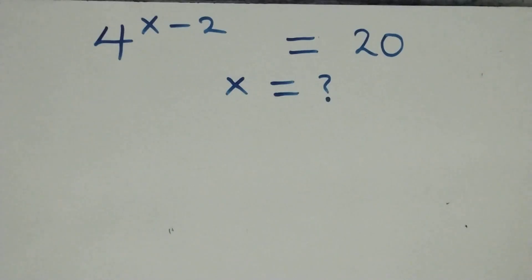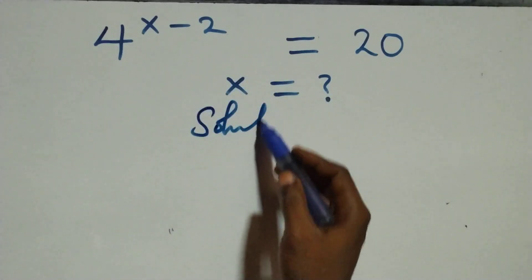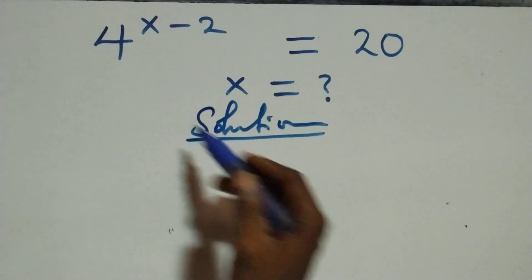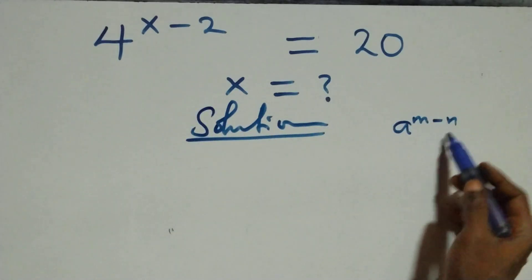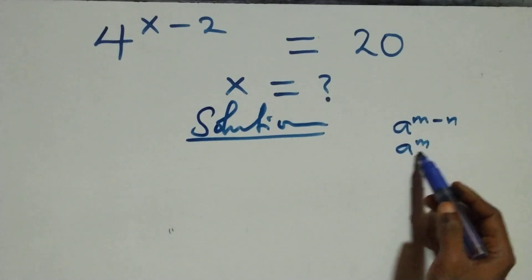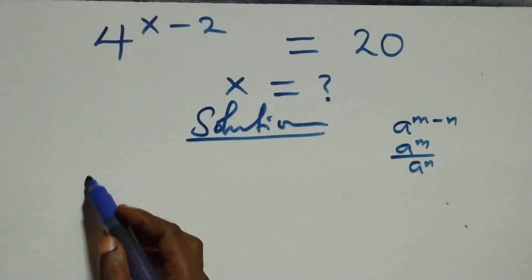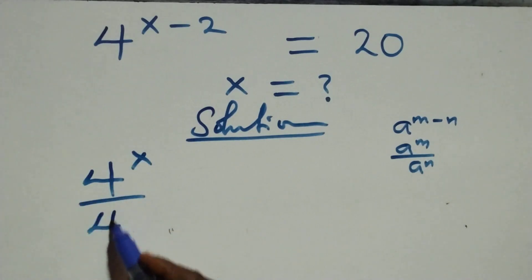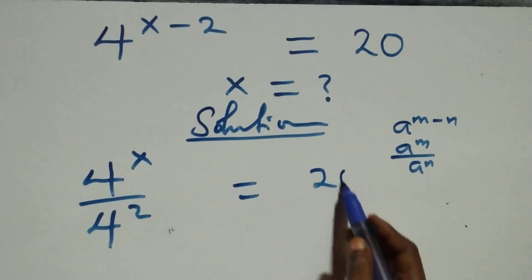Hello, you're welcome. We're going to solve this exponential equation. We use the rule that a raised to power n minus n equals a raised to power n over a raised to power n. Here we have 4 raised to power x over 4 squared equals 20.